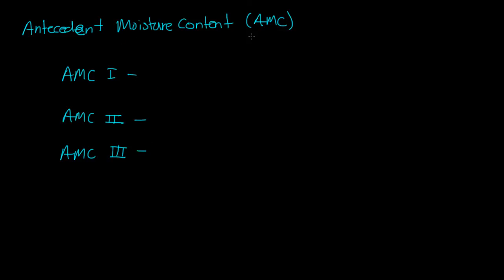Antecedent moisture content basically tells us how wet something is. So AMC one would be soil that's pretty dry, relatively dry. Antecedent moisture content two is average condition. So it's not completely dry, but it's not as wet as AMC three.